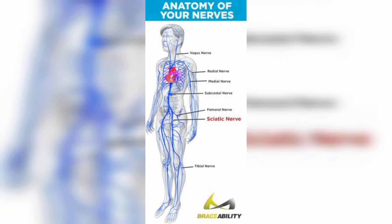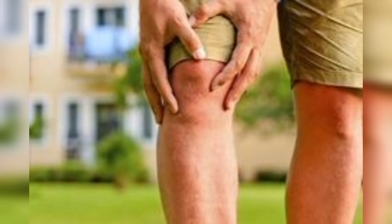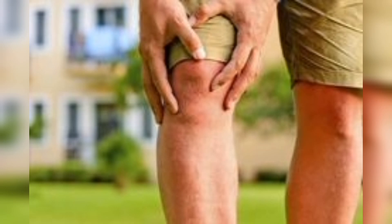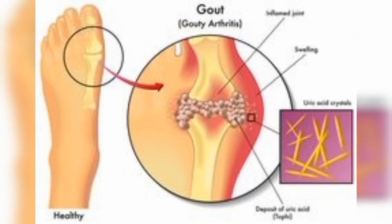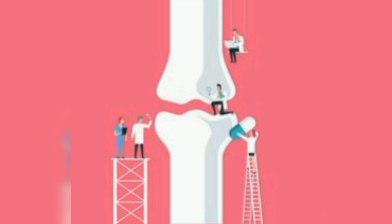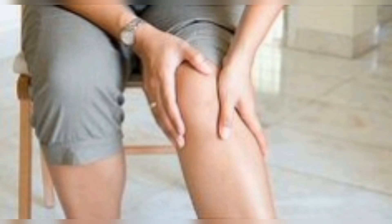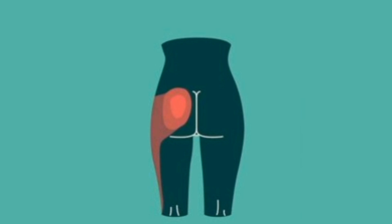Arthritis is one of the most common causes of joint pain, affecting millions of people worldwide. There are over 100 different types of arthritis, but the most common types are osteoarthritis, rheumatoid arthritis, and psoriatic arthritis. Osteoarthritis is caused by wear and tear on the joints, typically as a result of aging, injury, or obesity. Rheumatoid arthritis is an autoimmune disease that causes the body to attack its own joints. Psoriatic arthritis is a type of arthritis that can affect people with psoriasis, a skin condition that causes red, scaly patches on the skin.